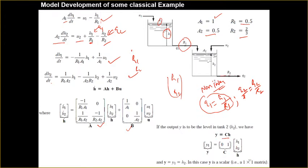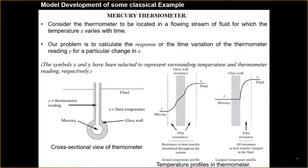The output y equals H2, and in matrix form we can represent this as y = [0, 1] times [H1, H2]^T, which gives H2. This is the complete state space representation of the non-interacting tank model.